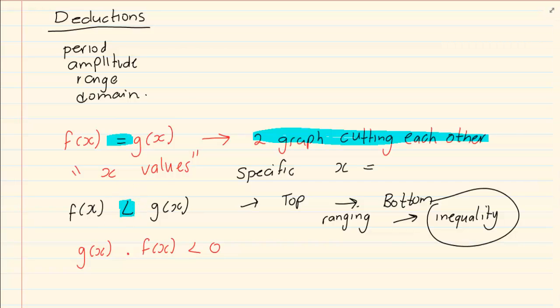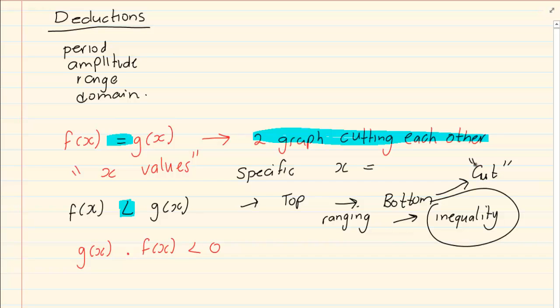The answer is also an inequality. But whereas in this inequality — the first one we did where it was top and bottom — it was usually where they cut, where the two graphs cut or where the two graphs met each other.